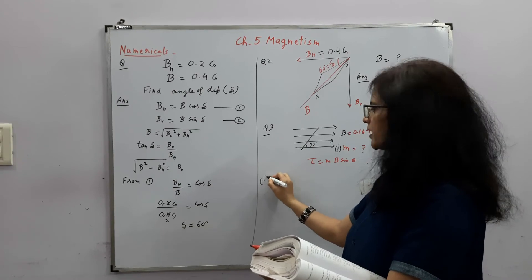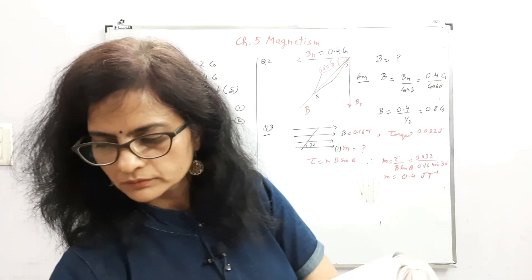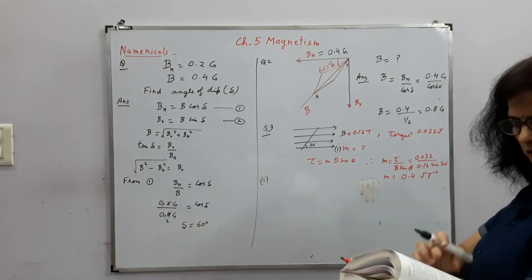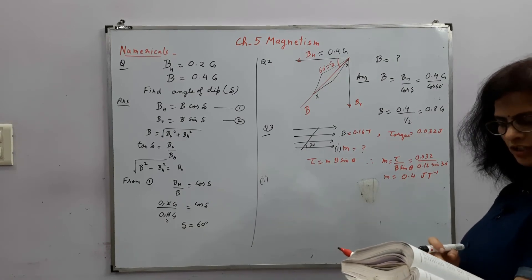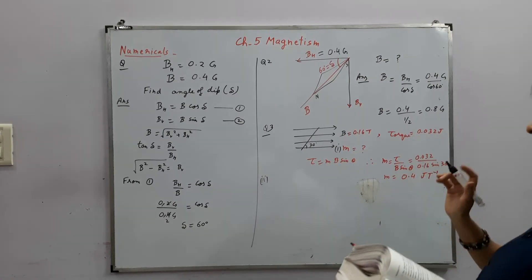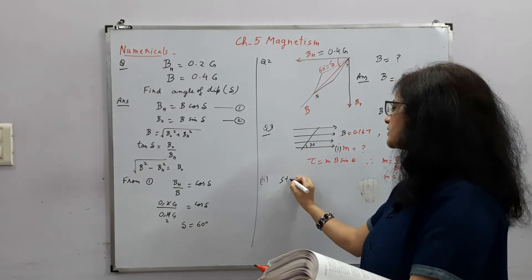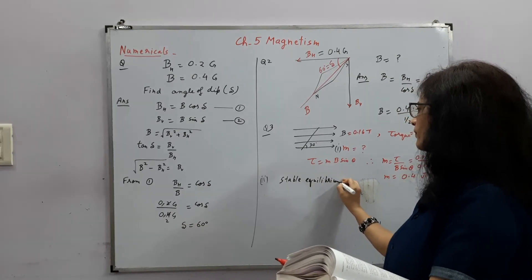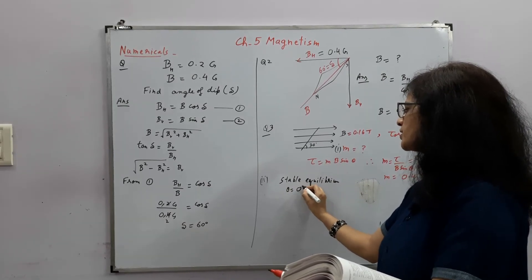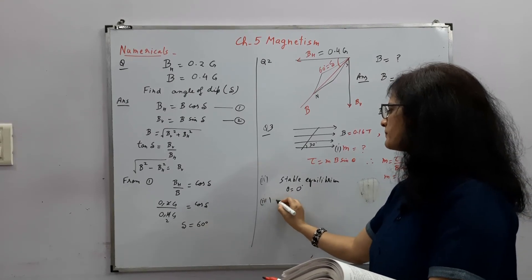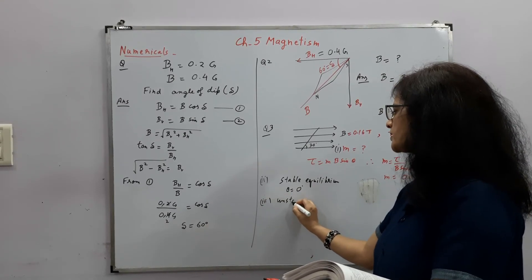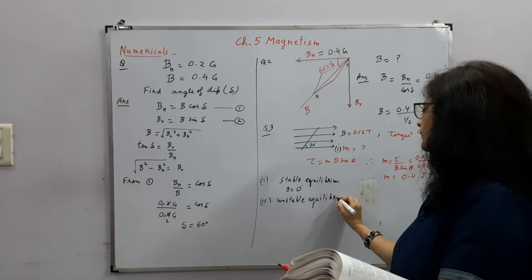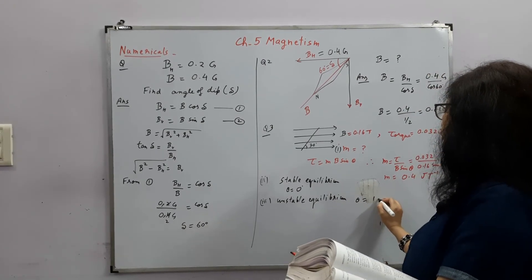Now second part what they are asking is, if the bar were free to rotate, which orientation would correspond to its stable and unstable equilibrium? You know this answer. Stable equilibrium means theta is equal to 0 degree.